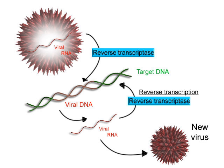A molecule that allows the genetic material to be realized as a protein was first hypothesized by François Jacob and Jacques Monod. Severo Ochoa won a Nobel Prize in Physiology or Medicine in 1959 for developing a process for synthesizing RNA in vitro with polynucleotide phosphorylase, which was useful for cracking the genetic code. RNA synthesis by RNA polymerase was established in vitro by several laboratories by 1965. However, the RNA synthesized by these enzymes had properties that suggested the existence of an additional factor needed to terminate transcription correctly. In 1972, Walter Fiers became the first person to actually prove the existence of the terminating enzyme. Roger D. Kornberg won the 2006 Nobel Prize in Chemistry for his studies of the molecular basis of eukaryotic transcription.